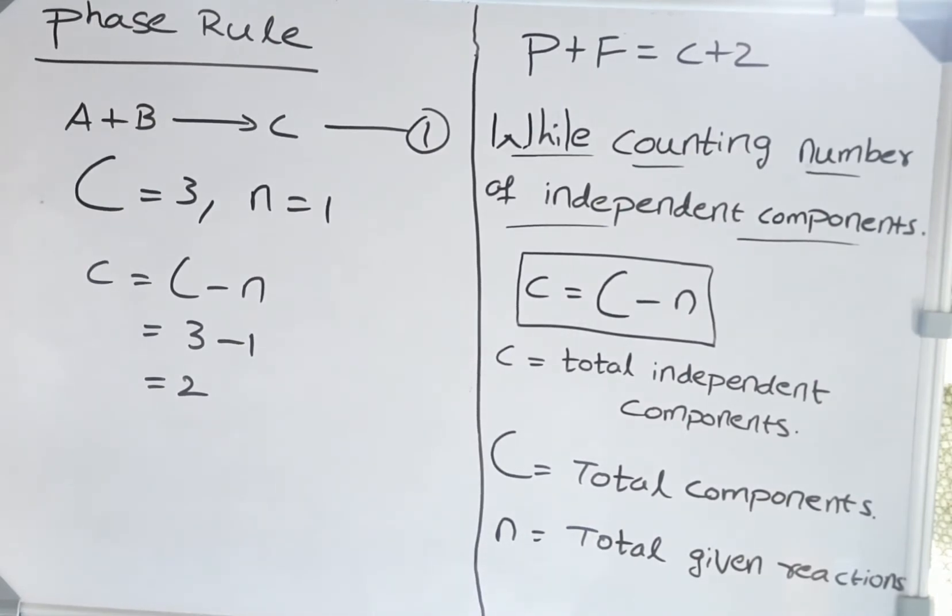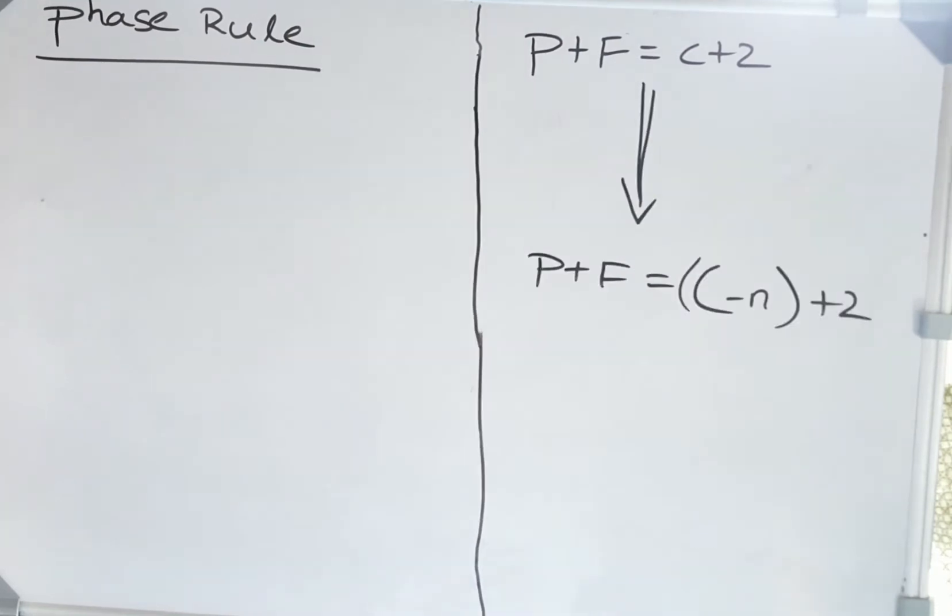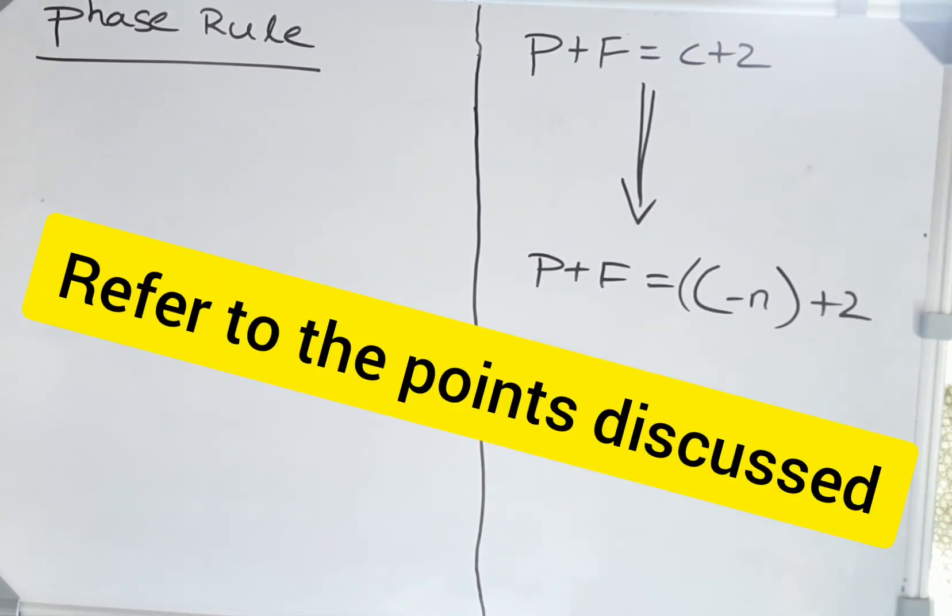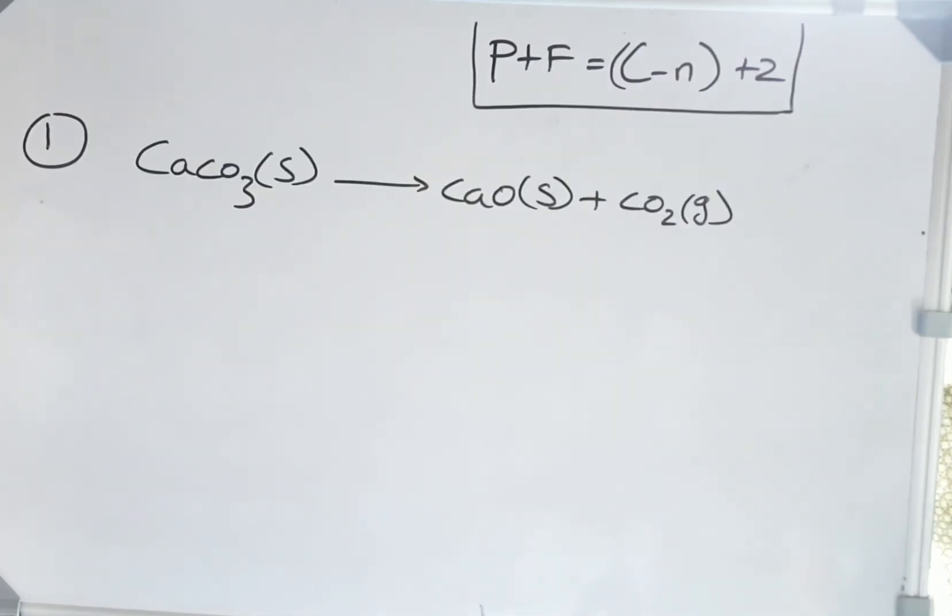Similarly, if we are given n reactions, the total number of independent components becomes total components minus n, where n is the total number of reactions. Why? Because each equation has a different equilibrium constant. Now the phase rule gets modified from P + F = C + 2 to P + F = (C - n) + 2. Now let's discuss the questions I showed earlier.